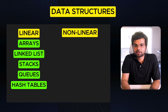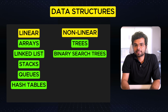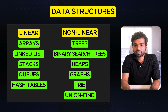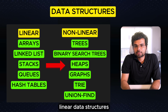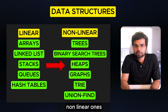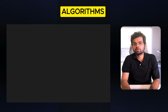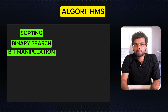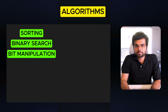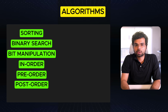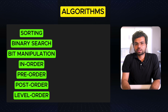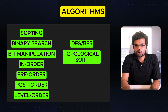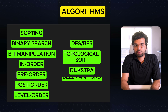Non-linear data structures include trees, binary search trees, heaps, graphs, tries, and union-find. You should start with linear data structures before moving on to non-linear ones since they are more complex. For algorithms, focus on sorting, binary search, bit manipulation, tree traversal algorithms including in-order, pre-order, post-order, and level-order, graph algorithms including DFS and BFS, topological sort, and shortest path algorithms like Dijkstra and Bellman-Ford.